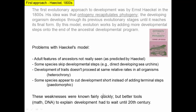These weaknesses were actually known fairly quickly, but people couldn't do too much about it. They knew it wasn't the full answer, but they didn't have the technology. It was only in the 20th century, when we had better mathematical approaches and DNA technology that we could use to explain development, that we were able to make progress. Although Haeckel came up with this proposal and made people think, better tools to explain development had to come a century later.